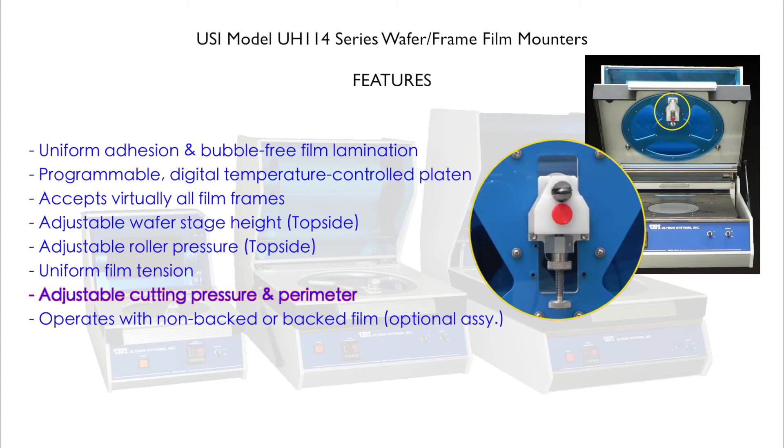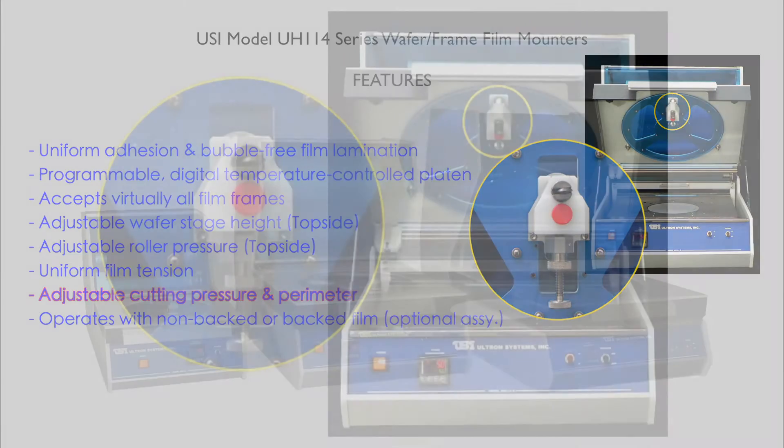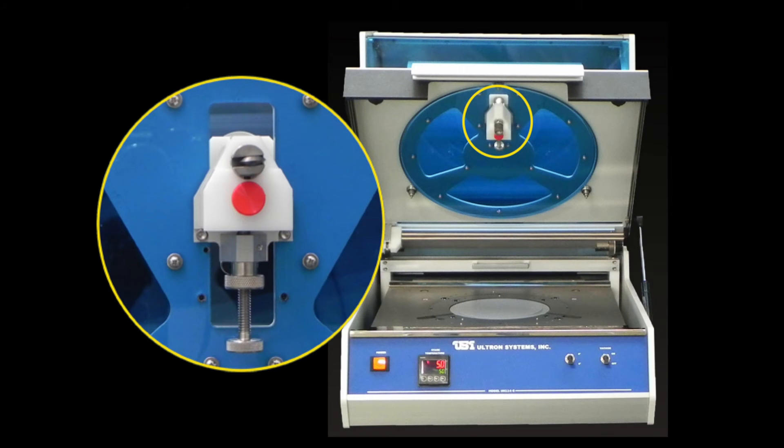Adjustable cutting pressure and perimeter. The wheel-type circular cutter has a pressure adjustment to accommodate various tape-based materials and thicknesses. Additionally, the cutting can be fine-tuned a quarter of an inch for specific and precise alignment on the film frame.